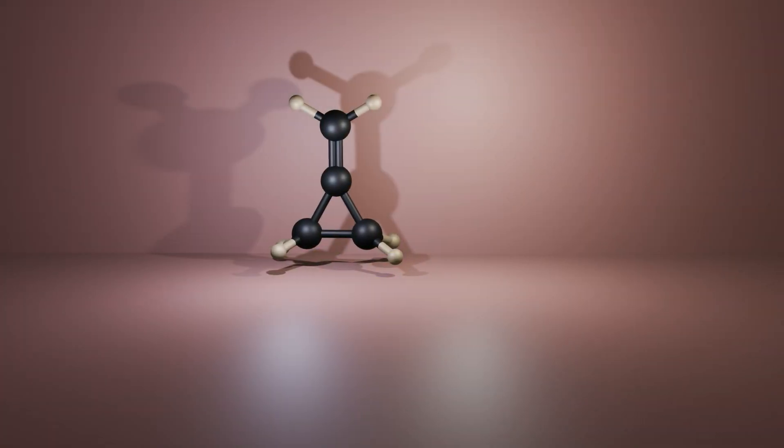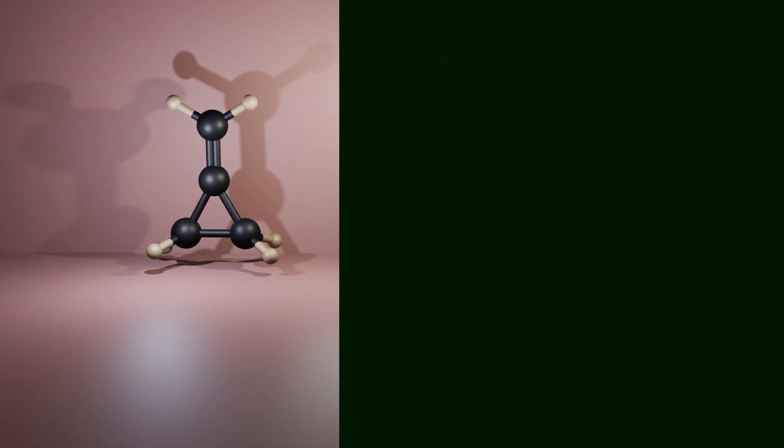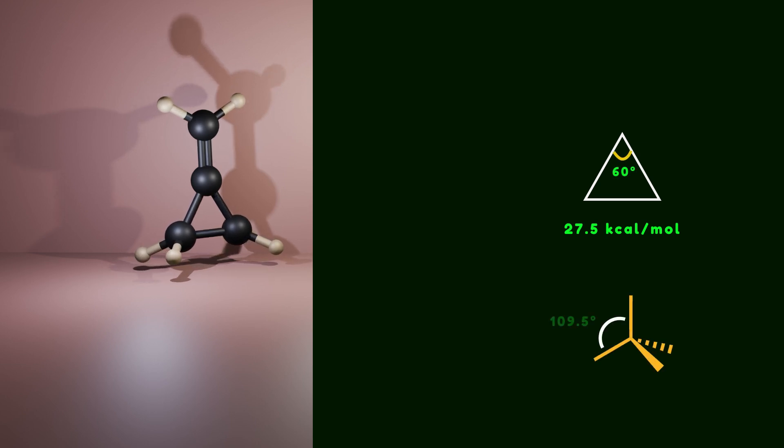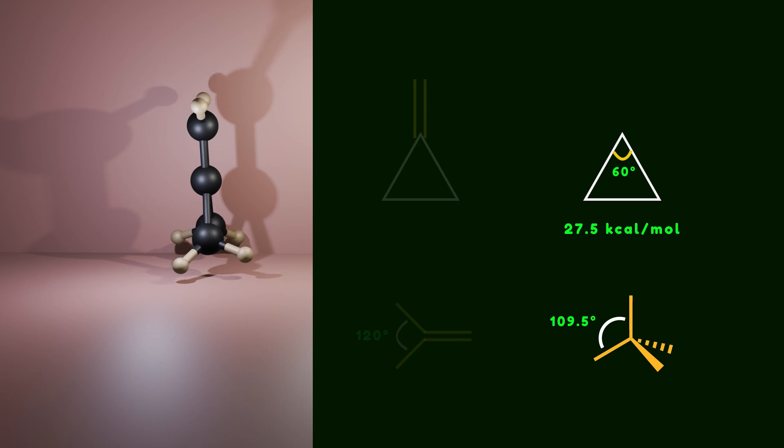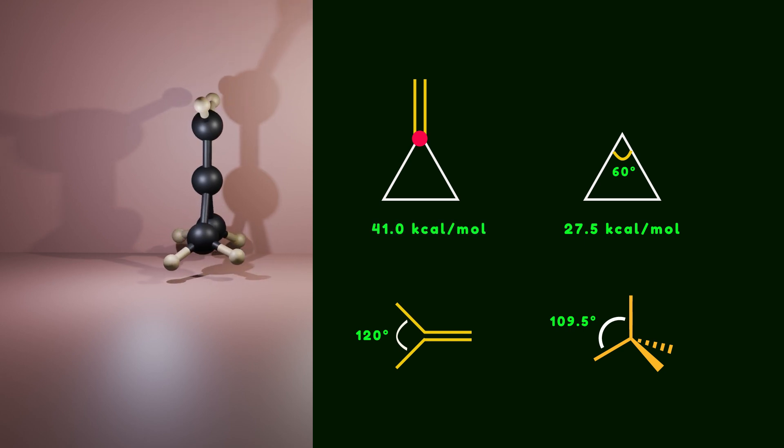Now what happens if we install a double bond on cyclopropane? The result is an increase in ring strain. Cyclopropane has 27.5 kilocalories per mole strain energy because of deviation from the ideal tetrahedral bond angle. Installing a double bond adds to this deviation because it introduces an sp2 carbon atom to the ring, resulting in 41 kilocalories per mole strain energy. This increased strain provides an opportunity for synthetic chemists to use it as a reactive compound in reactions.